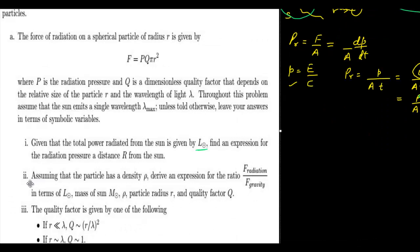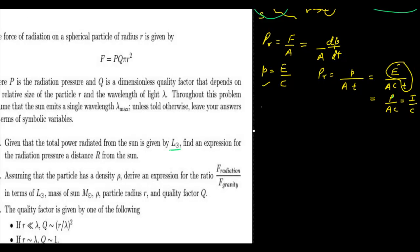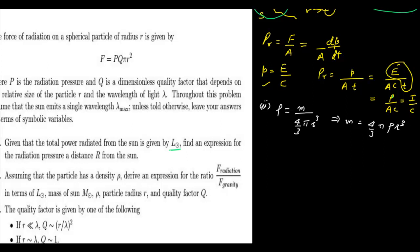In the second part, assuming the particle has density ρ, we need to derive an expression for the ratio F_radiation / F_gravity in terms of L, mass of the sun, density of the particle, particle radius, and the quality factor. The density of the particle is mass per unit volume, and for a spherical particle the mass is m = (4/3)π·ρ·r³.